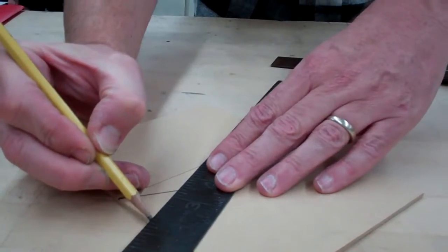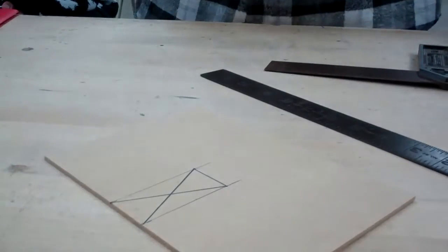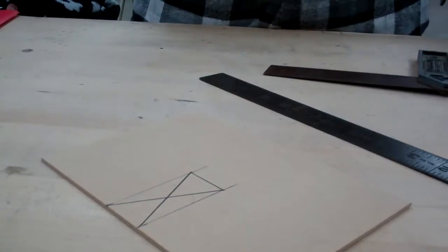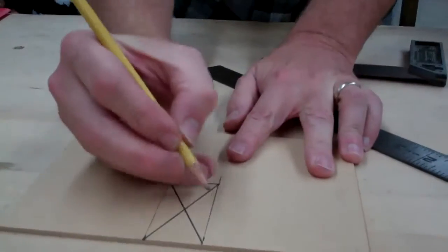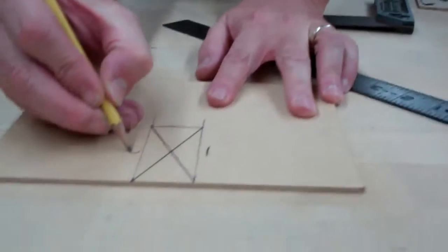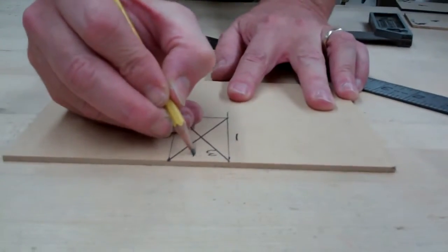Then you're going to need to number the lines. The reason you number the lines is that's the order of how you're going to cut at the jigsaw. One, two, three, four.